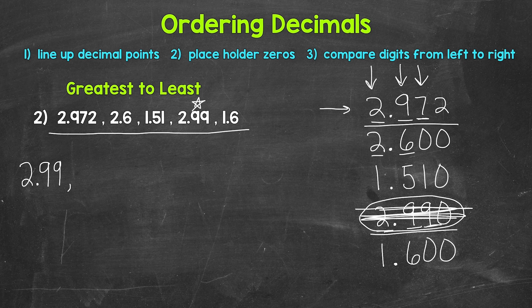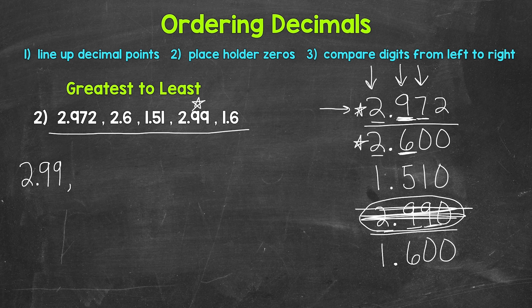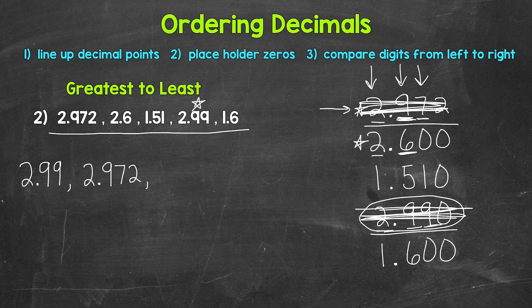Now back to what we have remaining — we start the process over. Starting in the ones place, we have a two, a two, a one, and a one. Two is greater than one, so we need to look at these two. Since both have a two in the ones place, we move to the tenths place. We have a nine and a six — nine is greater than six. So two and nine hundred seventy-two thousandths comes next. We can think of this as nine hundred seventy-two thousandths compared to six hundred thousandths — nine hundred seventy-two thousandths is greater.